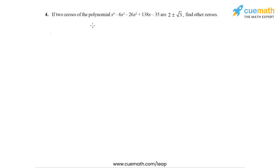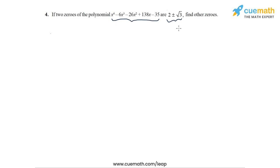Question 4 of this exercise says: if two zeros of this fourth degree polynomial are 2 plus or minus root 3, find the other zeros. So we are given a fourth degree polynomial, we are given two of its zeros, and we have to find the other two zeros. What approach can we use to solve this problem?